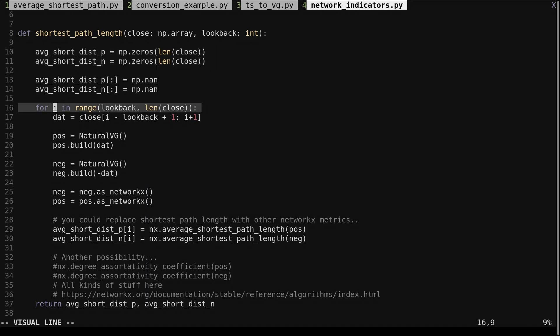We loop through the data. We get the recent closing price values as specified by the lookback parameter. We create a visibility graph using the recent values, then create another visibility graph using the negative recent values. We convert the graphs to the NetworkX format. Then we call the NetworkX function average shortest path length on each of the graphs.